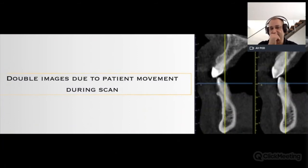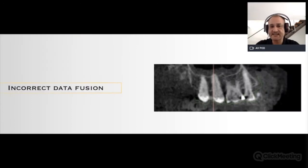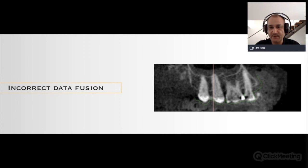Double imaging is another problem or error we may encounter. Artifacts and double imaging will contribute to errors in data fusion or integration. As shown in this example, you can see a clear space between the green line hint and the teeth structure, indicating the integration is not correct — this was due to double imaging.